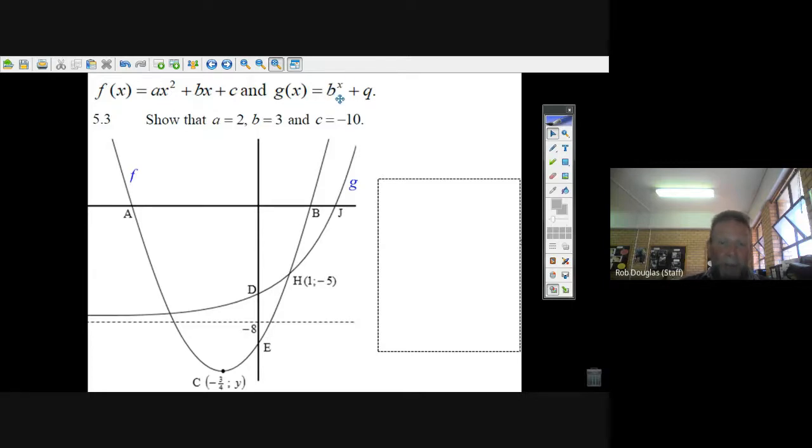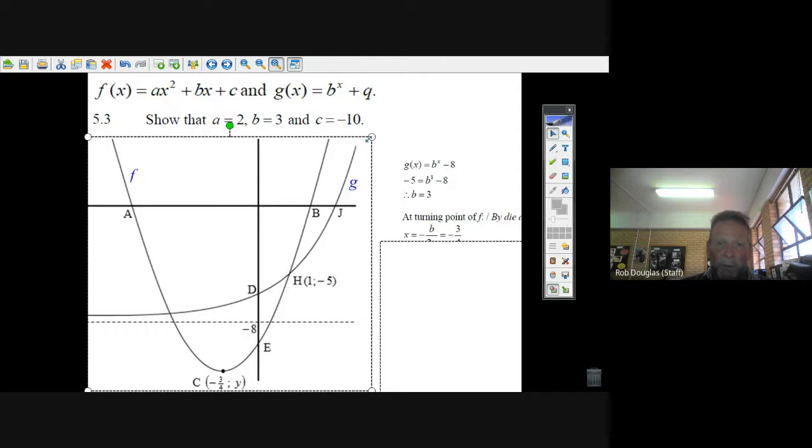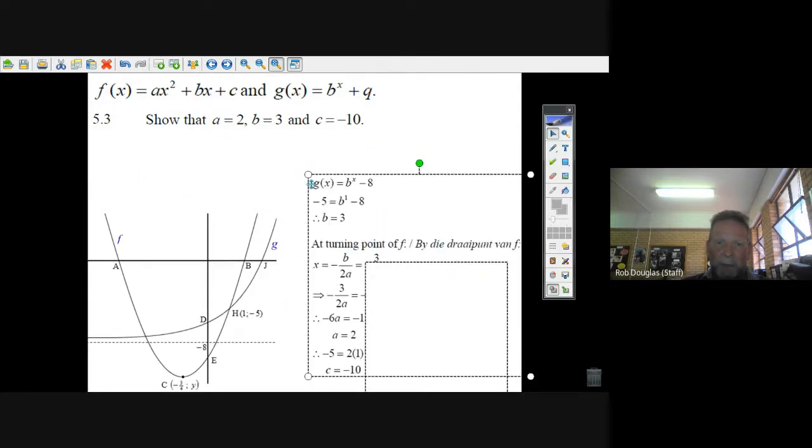So this equation is actually quite easy if you let b equal 3 there. And that's what you do. You actually let b equal 3. Let's just make this big. We're working with the exponential equation.